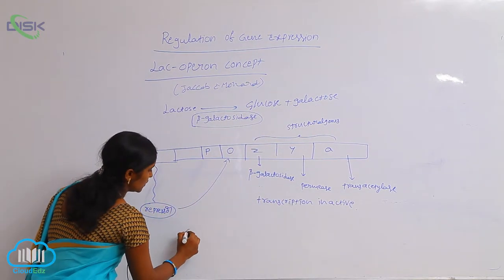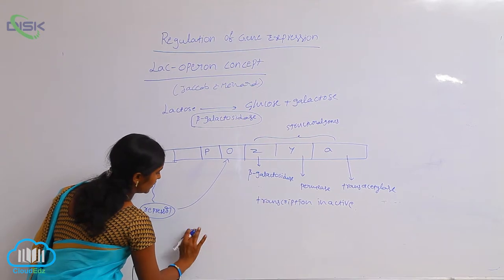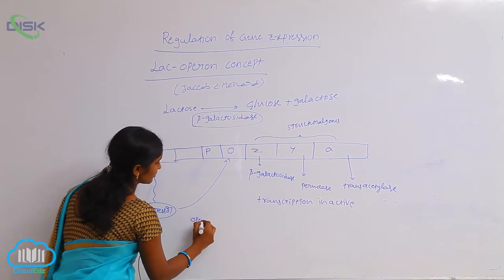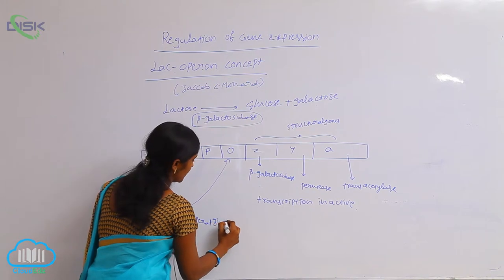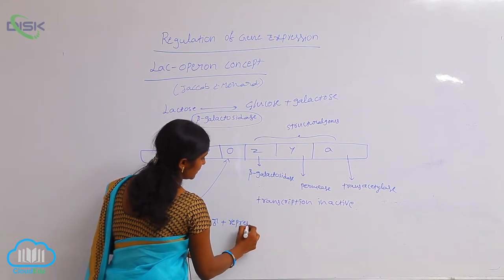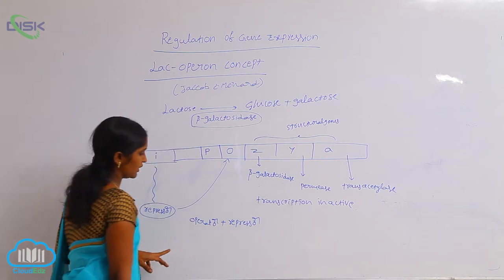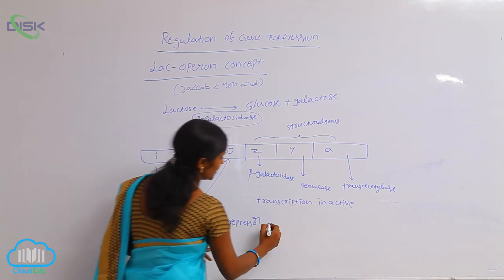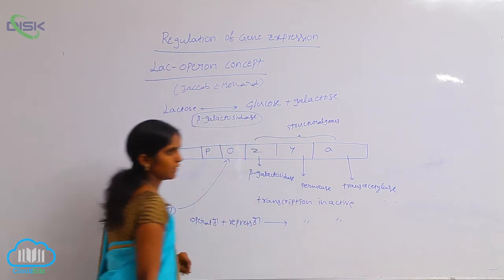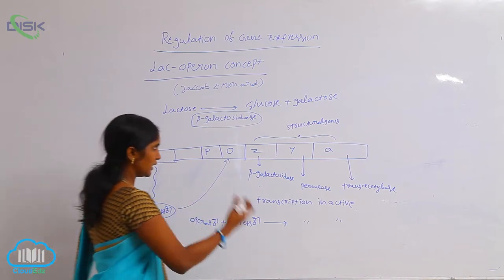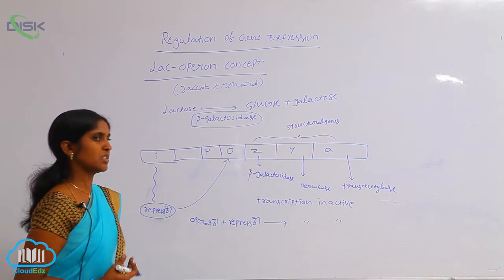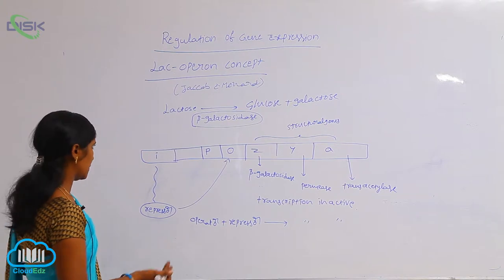You can see here: operator plus repressor. When the repressor protein is joined with the operator region, the transcription is inactivated. But in another condition — in the presence of the inducer — what is the inducer here? Lactose.